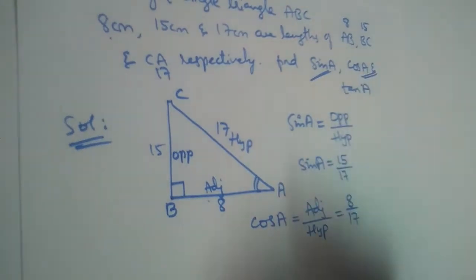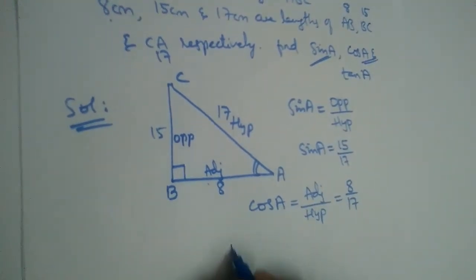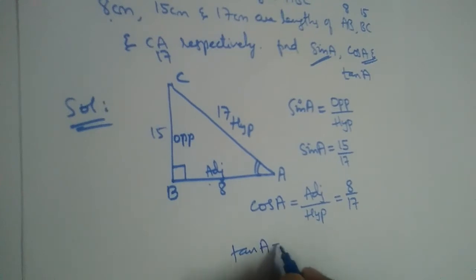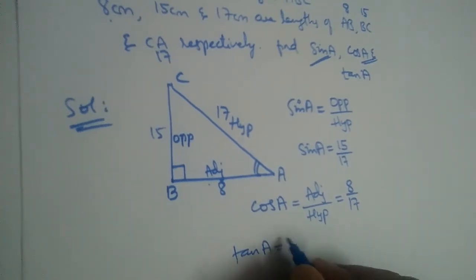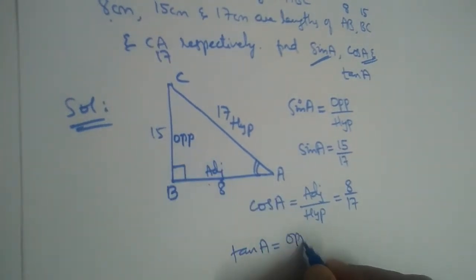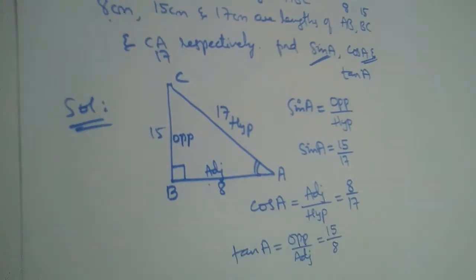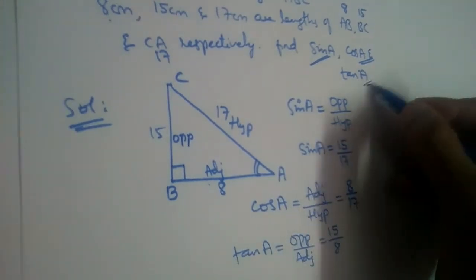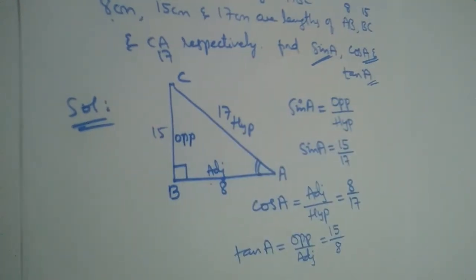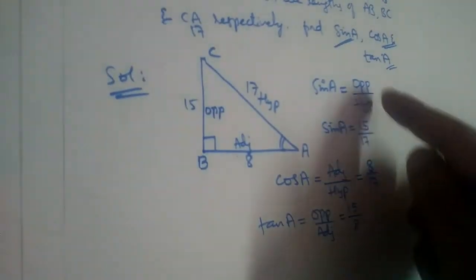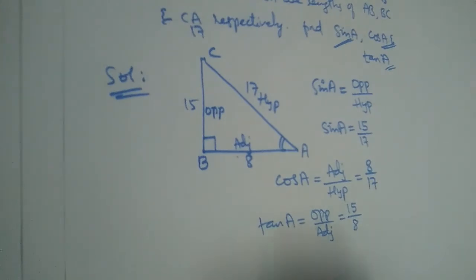Now what is tan A? The formula for tan is opposite by adjacent. In this case the opposite is 15 and adjacent is 8, so tan A is 15 by 8. If you are wondering how we got this, I highly recommend you go watch my video in which I have explained trigonometric ratios.